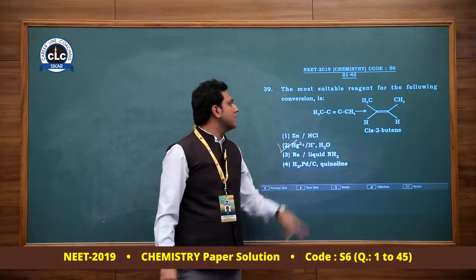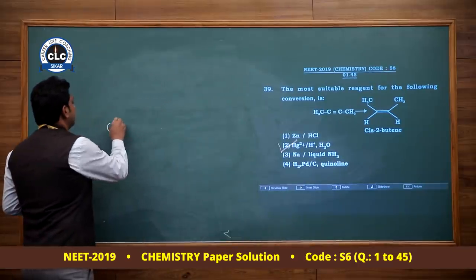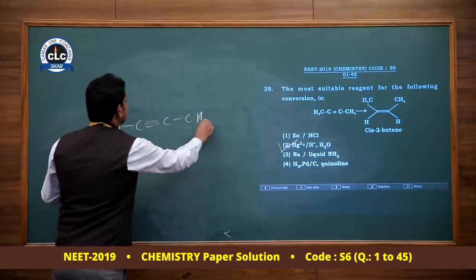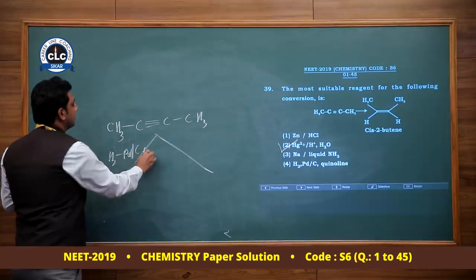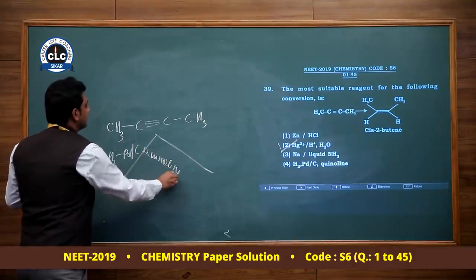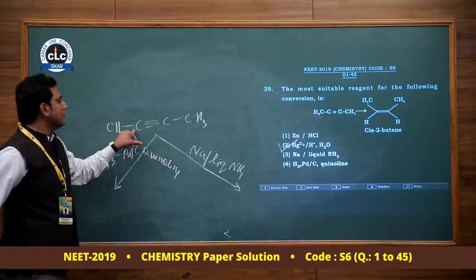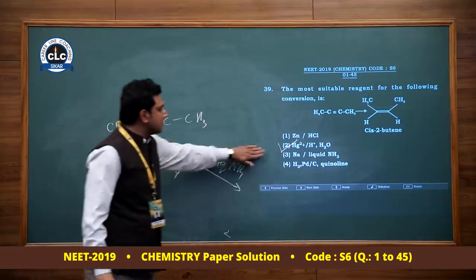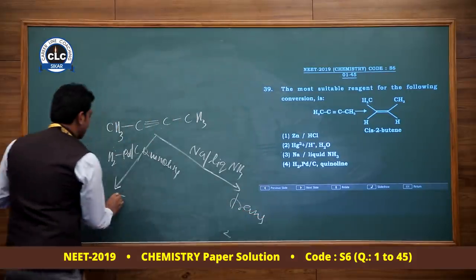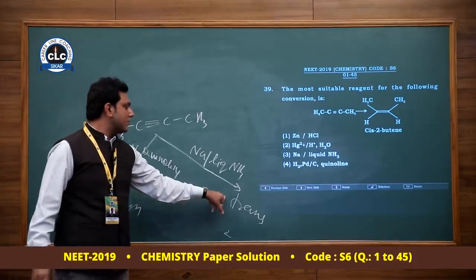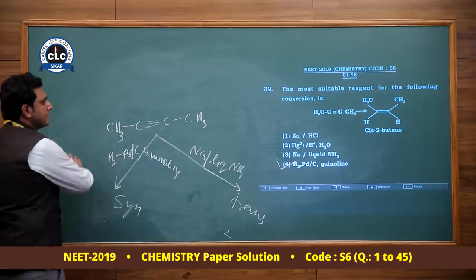Most suitable reagent for conversion of pent-2-yne to cis-2-butene: using Lindlar's catalyst (H2, Pd/C, quinoline or Pd/BaSO4) gives cis (syn addition) alkene. Na in liquid NH3 gives trans alkene via anti addition. To get cis product, use Lindlar's catalyst. Answer is option 4.